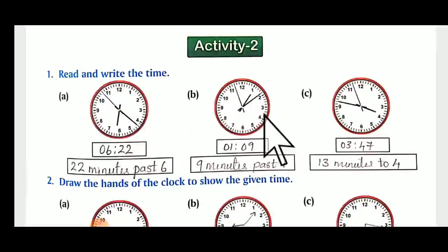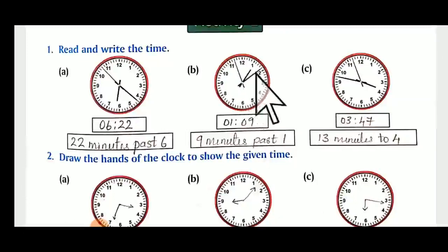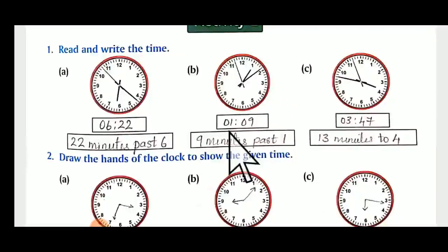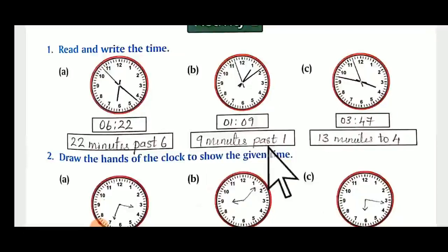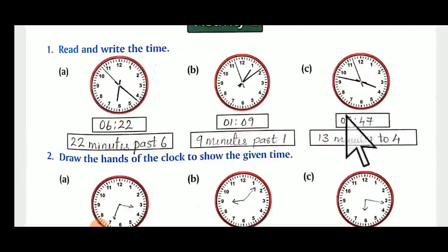B: the smaller hand is at one and the minutes hand is just before ten — that means nine minutes. We write nine minutes past one o'clock. One o'clock has passed and nine minutes have gone by — nine minutes past one o'clock.